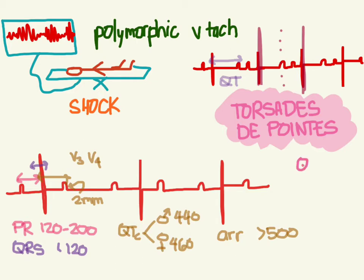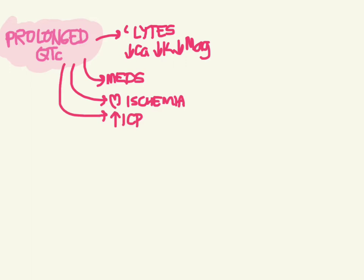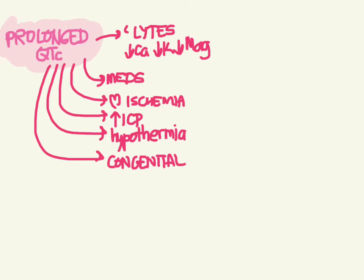So if we're going to talk about torsade, we should also talk about prolonged QTcs. What causes a prolonged QT? The first things to look at are the hypo-electrolytes: hypocalcemia, hypokalemia, and hypomagnesemia. All kinds of meds can do it — from Benadryl to antipsychotics, to certain antibiotics like Levaquin. Find one of those lists and compare it to the medications the patient is on. There are other things that can cause it too, like cardiac ischemia, increased ICP from a head bleed, hypothermia, and congenital or inherited mutations of certain potassium and calcium channels. These are commonly referred to as the acquired causes, and then there's the congenital cause.